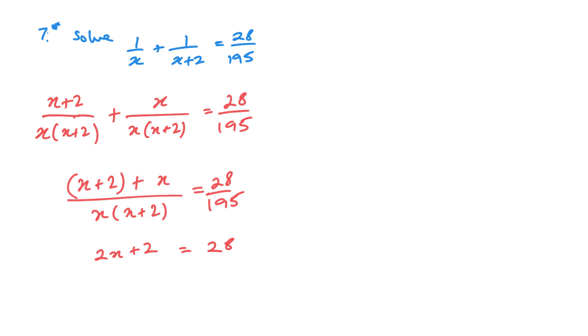So, 28 times by my x, x plus 2. And 195 multiplied by this 2x plus 2. So, now, we've got 28x squared plus 56x. And on this side, we have 390x plus 390. Now, let's get everything on the side of the x squareds. So, we've got 28x squared. 56 minus 390 is negative 334x. And then minus 390.